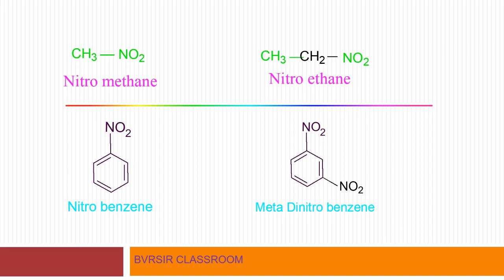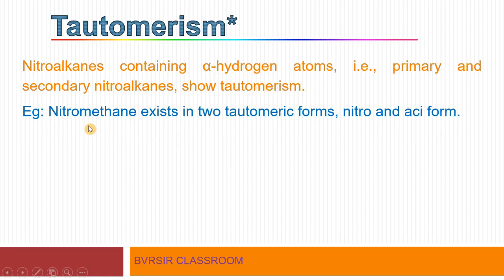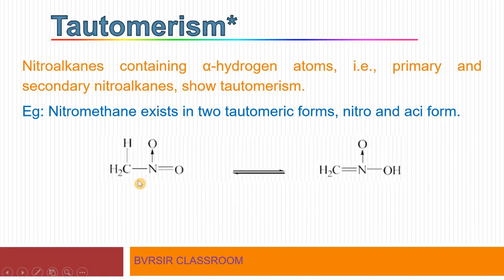Now let us discuss tautomerism, which plays a very important role in nitrohydrocarbons — mark this with a star. Tautomerism arises due to proton transfer. Nitroalkanes containing alpha hydrogen atoms, that is primary and secondary nitroalkanes, have the ability to show tautomerism. For example, nitromethane exists in two tautomeric forms: the nitro form (CH3NO2) and the aci form.